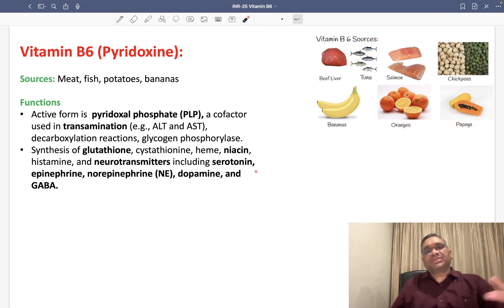They are the richest source of Vitamin B6. To understand the function, we have to remember that their active form is pyridoxal phosphate (PLP). This is the active form of pyridoxin. This pyridoxal phosphate, which is the active form, will be a cofactor.